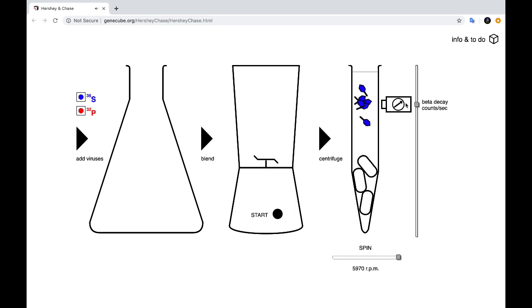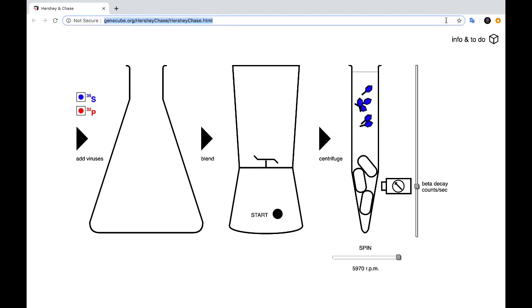Now we can use the sensor to detect the presence of radioactivity. And you can see that as the dial swings to the right, we can detect radioactivity in the supernatant at the top, but not in the bacteria at the bottom that were infected by the viruses.